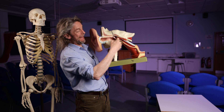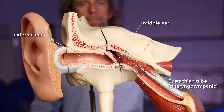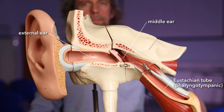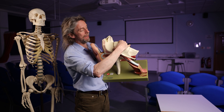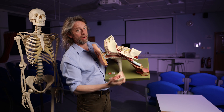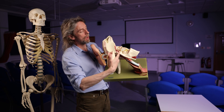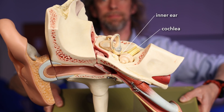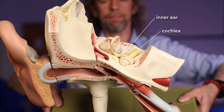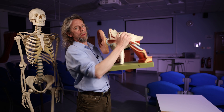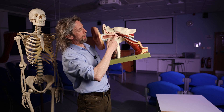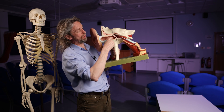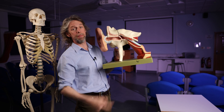So here, this is the middle ear, external ear, middle ear, and then inside the bone here we find the cochlea, we find the semicircular canals and the other vestibular apparatus — that's the inner ear. So the tympanic membrane is the boundary, the separation between the external ear and the middle ear.